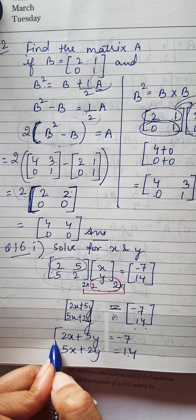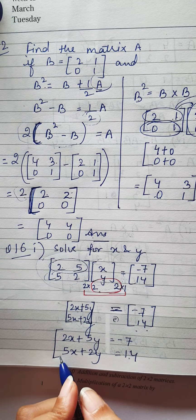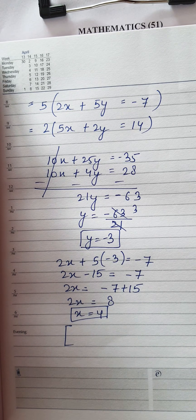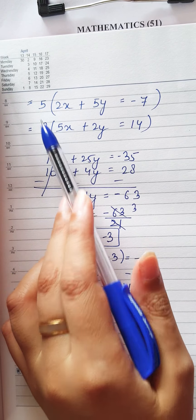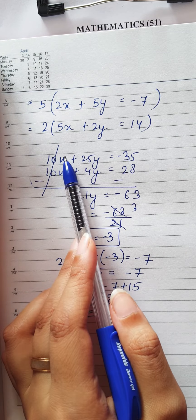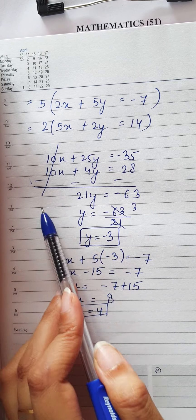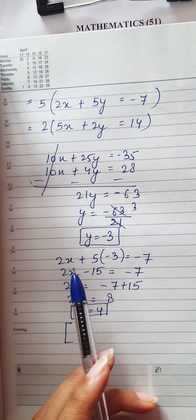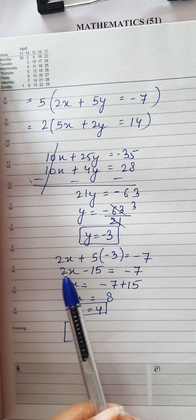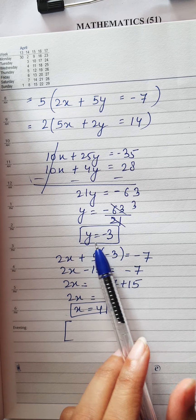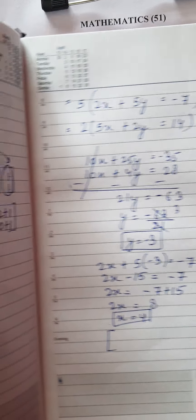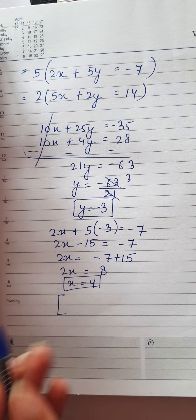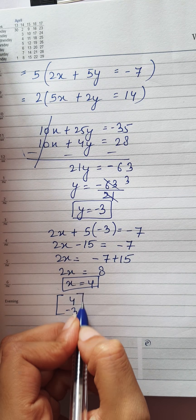This gives a system of simultaneous equations. You can solve by substitution, elimination, or cross-multiplication. Using elimination: multiply equations so x-coefficients match, eliminate x, and solve for y. Substitute back to find x. After solving, x = 4 and y = −3. Since the question gives x and y in matrix form, the answer must also be left in matrix form: [4, −3].